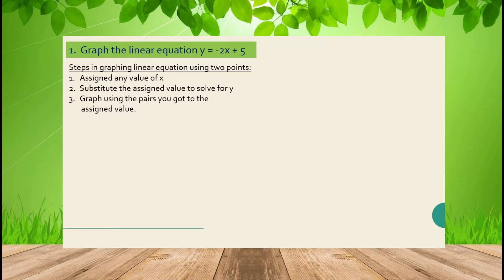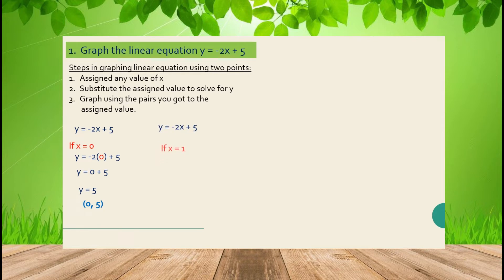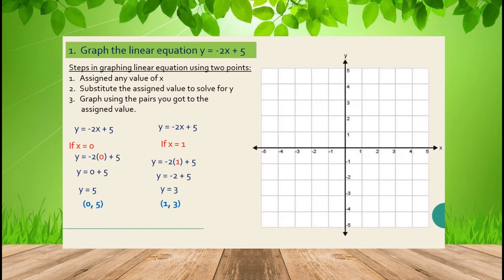Using the equation y = -2x + 5, assign x = 0 and substitute: y = -2(0) + 5, so y = 5. You have the point (0, 5). For another assigned value, if x = 1, substitute and get y = 3, giving the second point (1, 3). Graph (0, 5) on the positive y-axis and (1, 3), then connect the two points. That is the graph of y = -2x + 5.